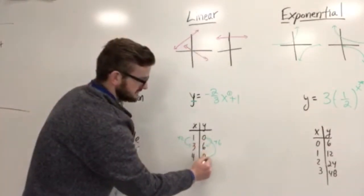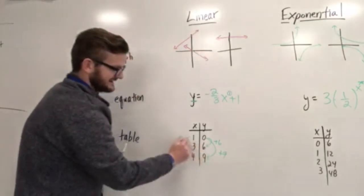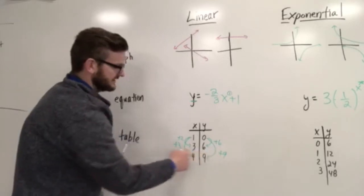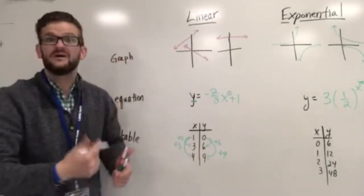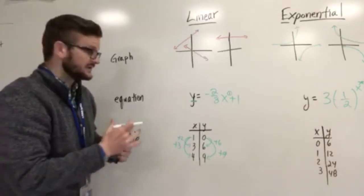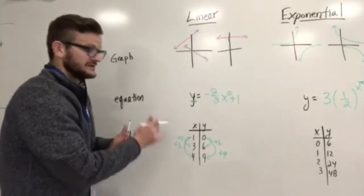Now if I chose these, the first and the last point, 0 to 9, I added 9. 1 to 4, I added 3. 9 over 3 is also 3. So it's a constant rate of change. The rate of change is the same no matter what two points we choose.